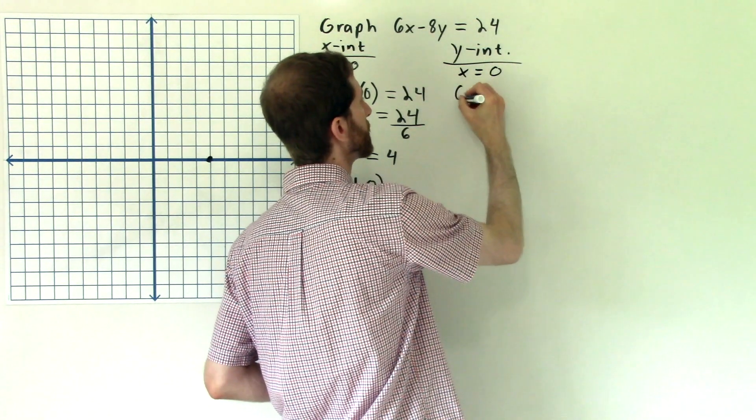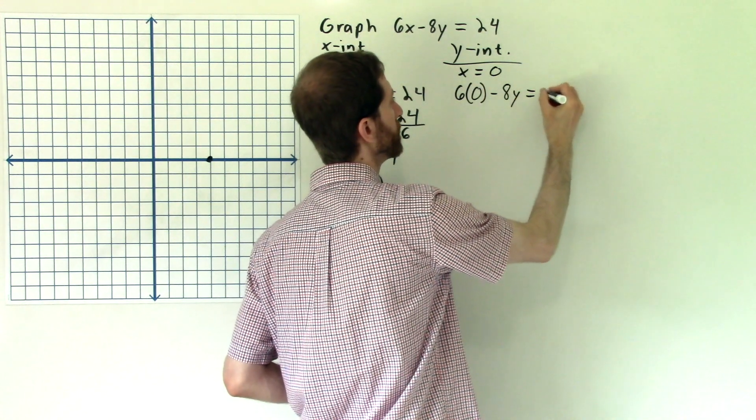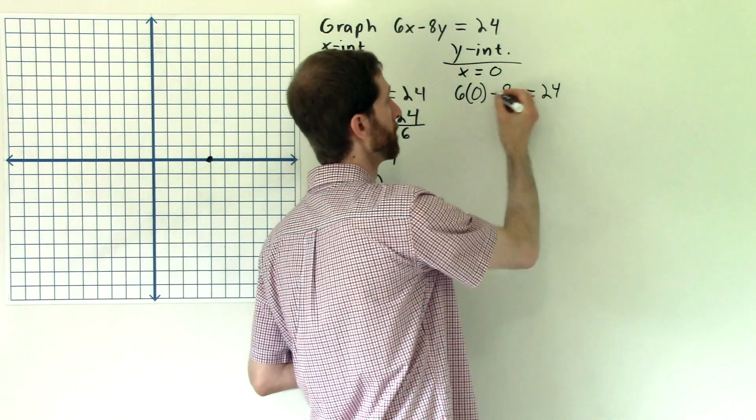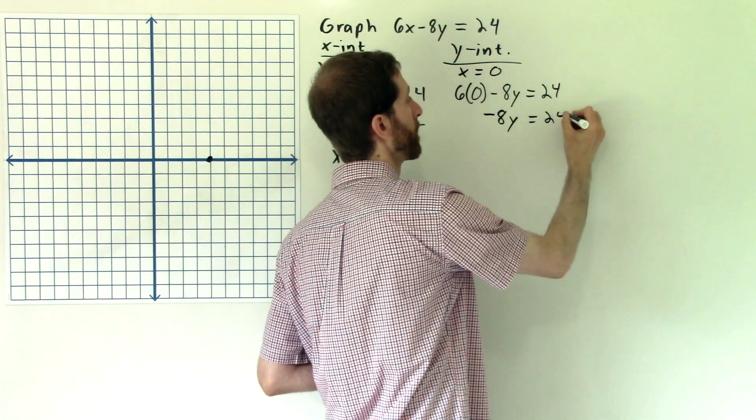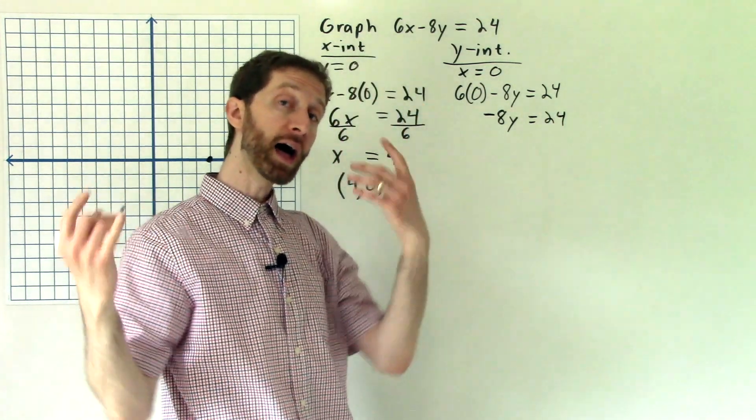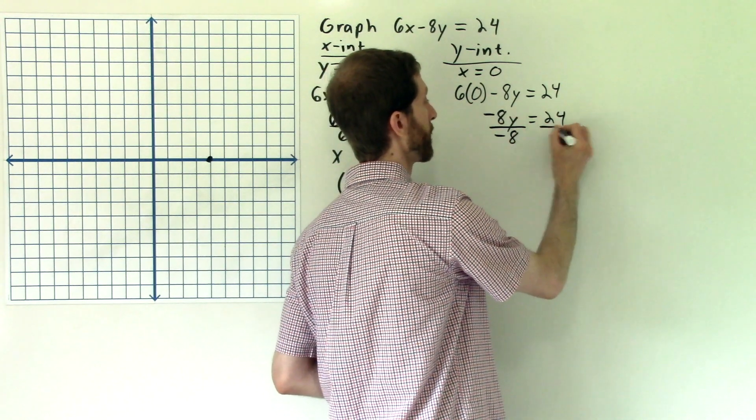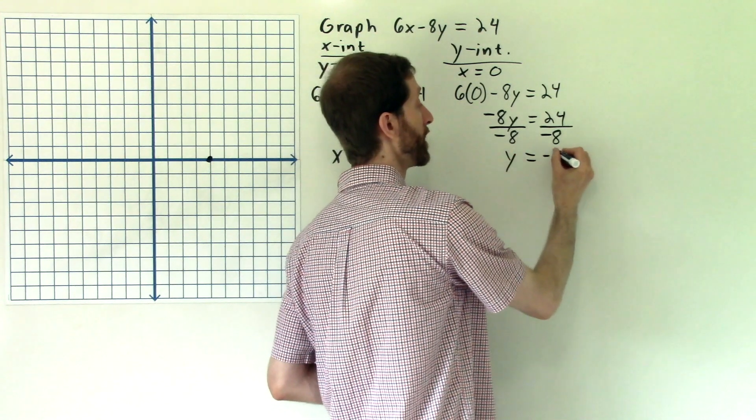So that's 6 times zero minus 8y is equal to 24. So now from here, I'm going to solve for y. So 6 times zero is zero. Negative 8y is what I'm left with, equal to 24. And I divide both sides by negative 8. So we divide by negative 8. That gives us y alone, and so we're left with y equals negative 3.